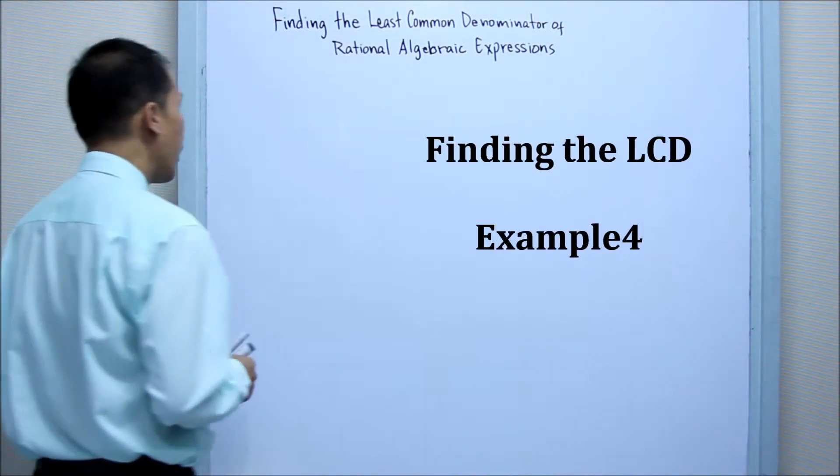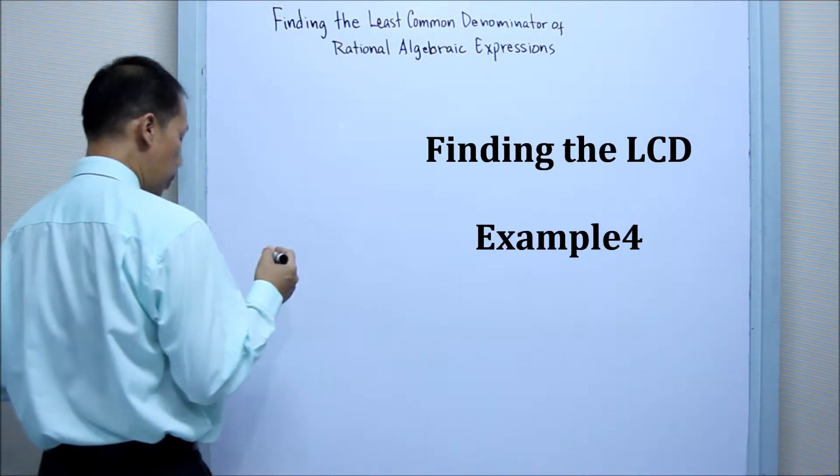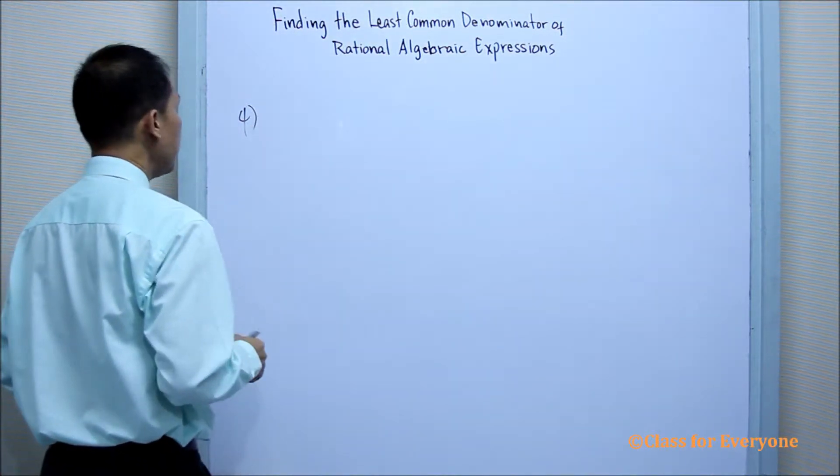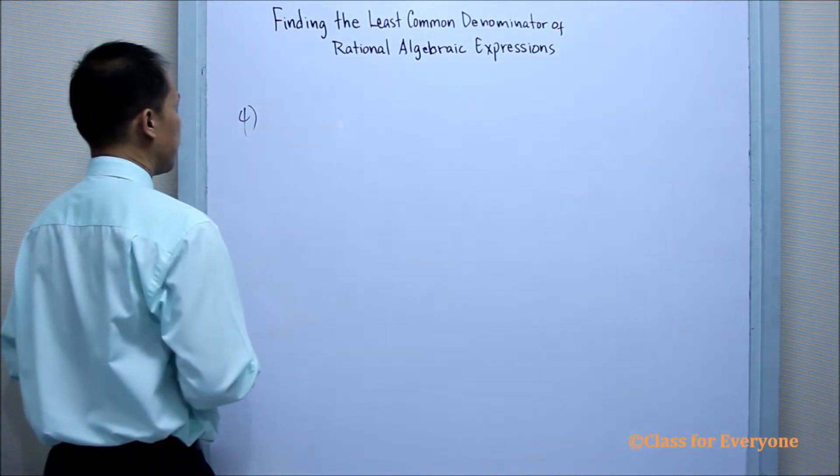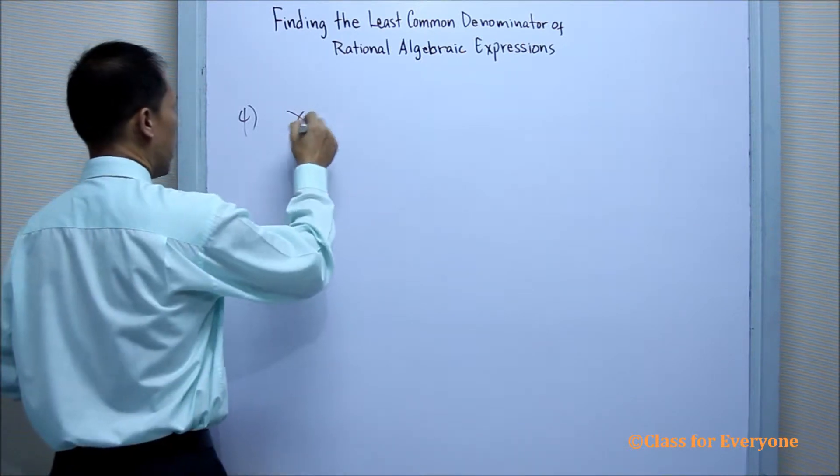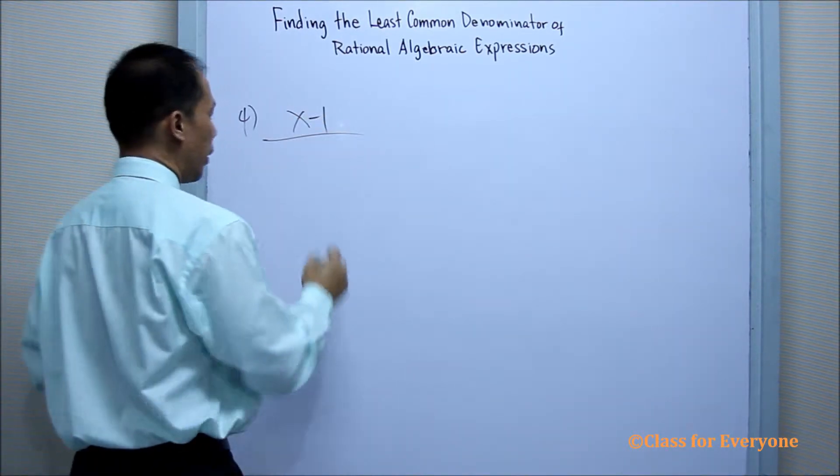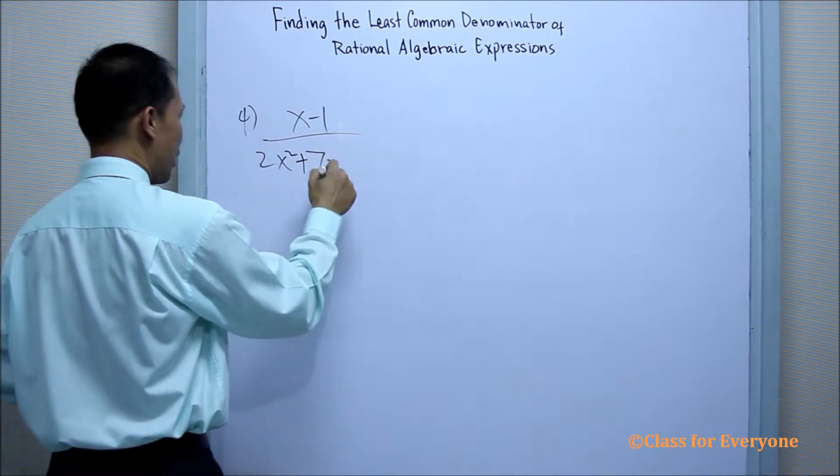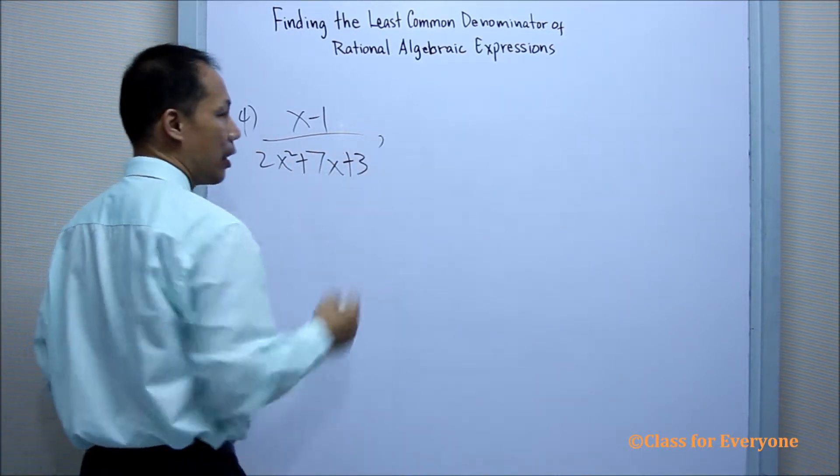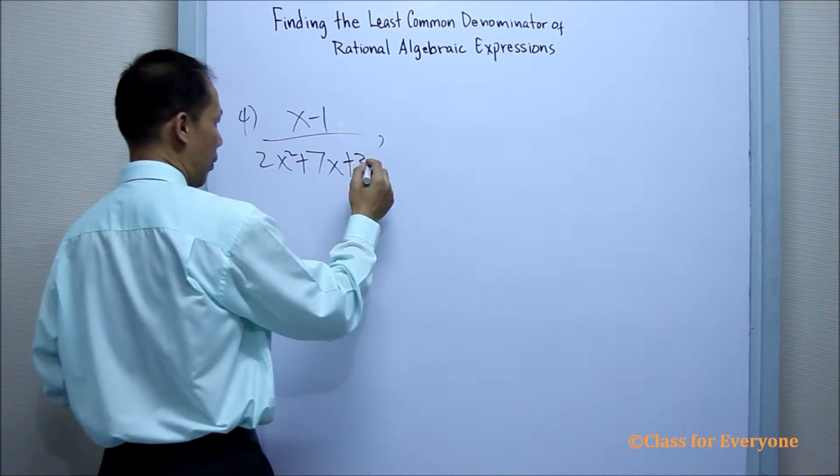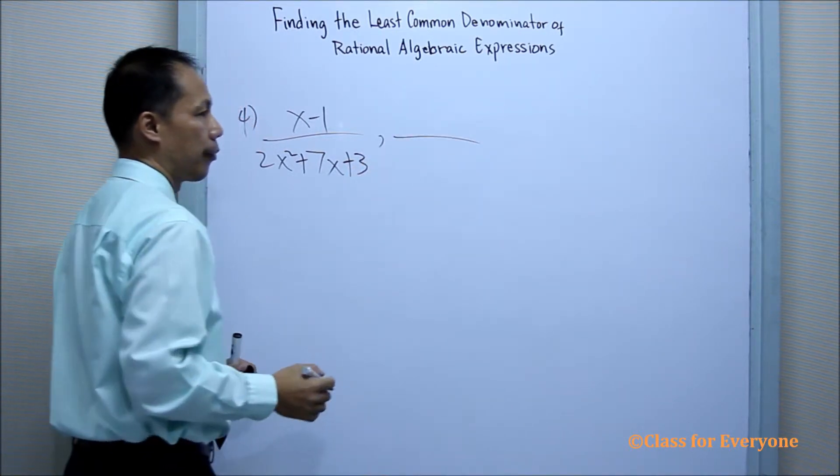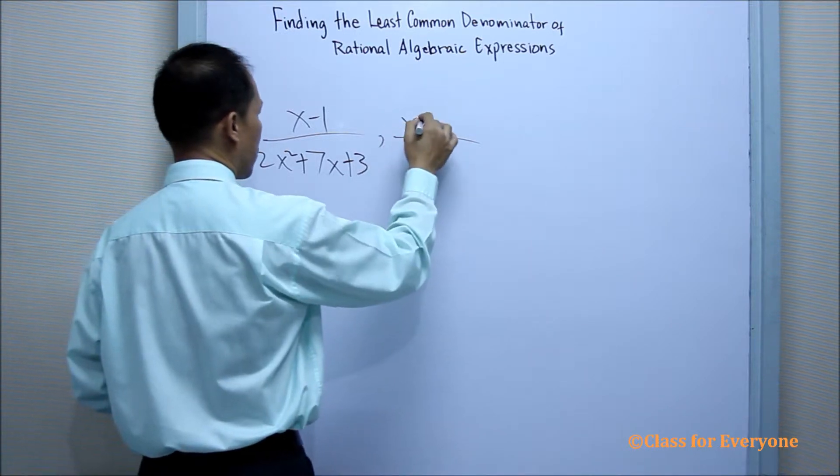Another example. Example number 4. We have x minus 1 and 2x squared plus 7x plus 3 and then x minus 2.